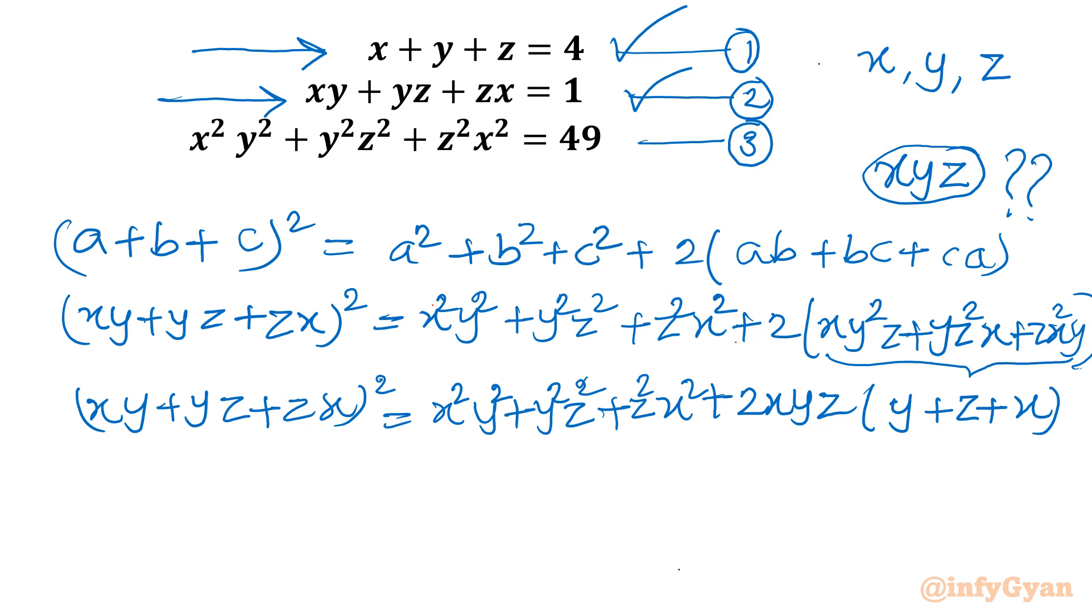Let's put our values. From equation number 2 we will put here 1, so it will become 1 squared equals, from equation number 3 I will substitute 49 here. So it will become 49 plus 2 times xyz. From equation number 1 I will write here 4.